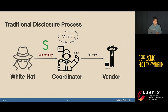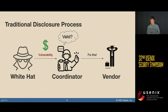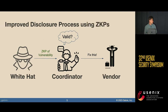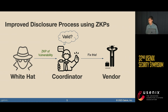One downside is that vulnerabilities are actually very valuable. If you find a vulnerability in iOS, this could be millions of dollars, and you have to trust the coordinator not to use that vulnerability, sell it, or share it with nefarious people. So what we're proposing is that instead of giving the coordinator your vulnerability, you present them a zero-knowledge proof of that vulnerability, and they can continue the disclosure process as normal.